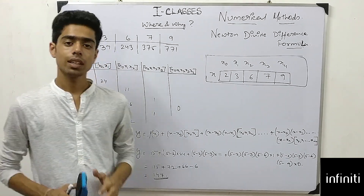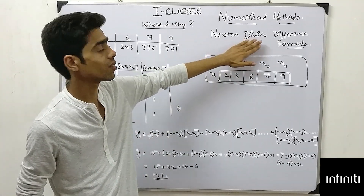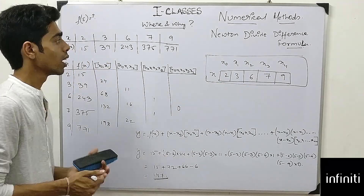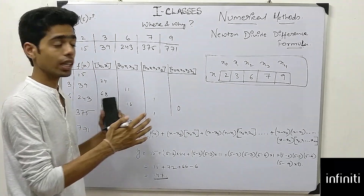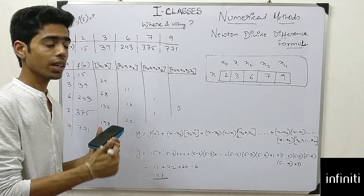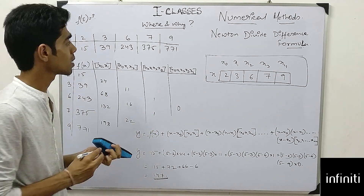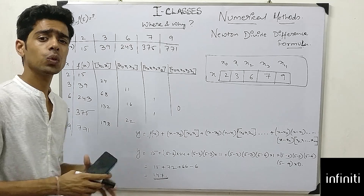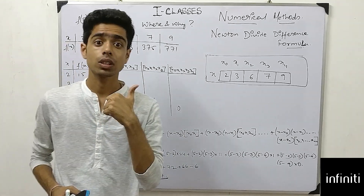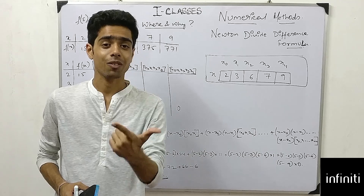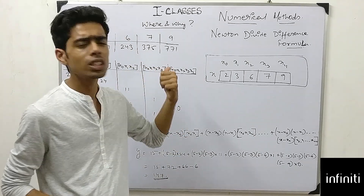Hello everyone, today in this video we are going to learn about what is Newton's Divided Difference Formula. It is one of the formulas used in the interpolation method. My first question is: where and why will I use this formula? You have Newton's forward interpolation, backward interpolation, and Lagrangian interpolation — why will you use this formula?